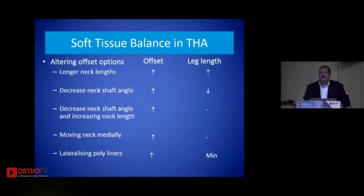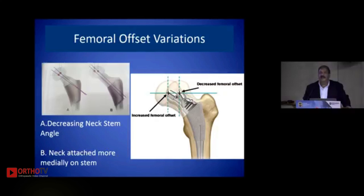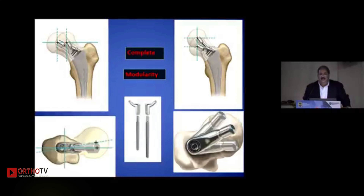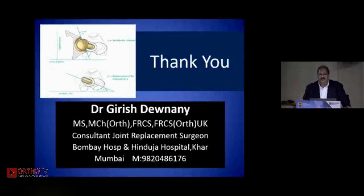There are options to increase offset. If you only use a longer neck length, you increase offset but also make the patient's limb longer — that's not ideal. Other options include decreasing the neck-shaft angle or combining increased neck length with a decreased neck-shaft angle, or attaching the stem more medially. Do not correct medial offset by simply increasing vertical offset — you will have an unhappy patient with a longer limb, and litigation will follow. Complete modularity is the name of the game today. We have systems which give us this option, and I implore all of you to understand this and use your implants accordingly.